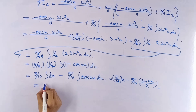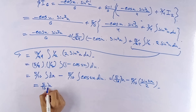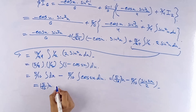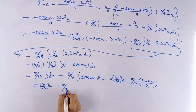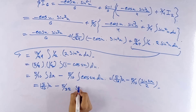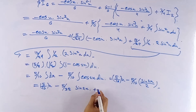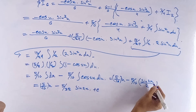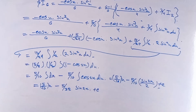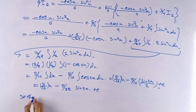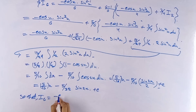That equals to 5 by 16 of x minus 5 by 32 of sine 2x, plus c, where c is the constant of integration.